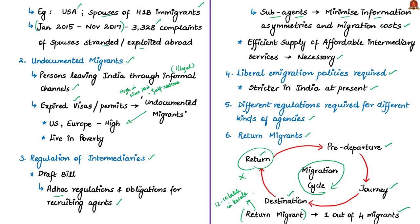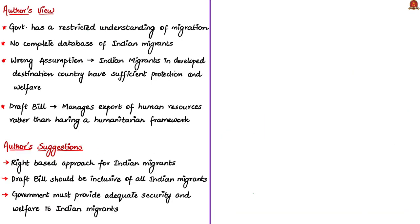From all the negatives and concerns shared by the authors, the government has a restricted understanding of migration from India. There is no complete database about the number of Indian migrants living abroad. Also, there is a wrong assumption that Indian migrants in developed destination countries have sufficient protection and welfare. The authors feel that the draft bill shows the government's primary view of immigration policy is for managing the export of human resources rather than having a humanitarian framework.